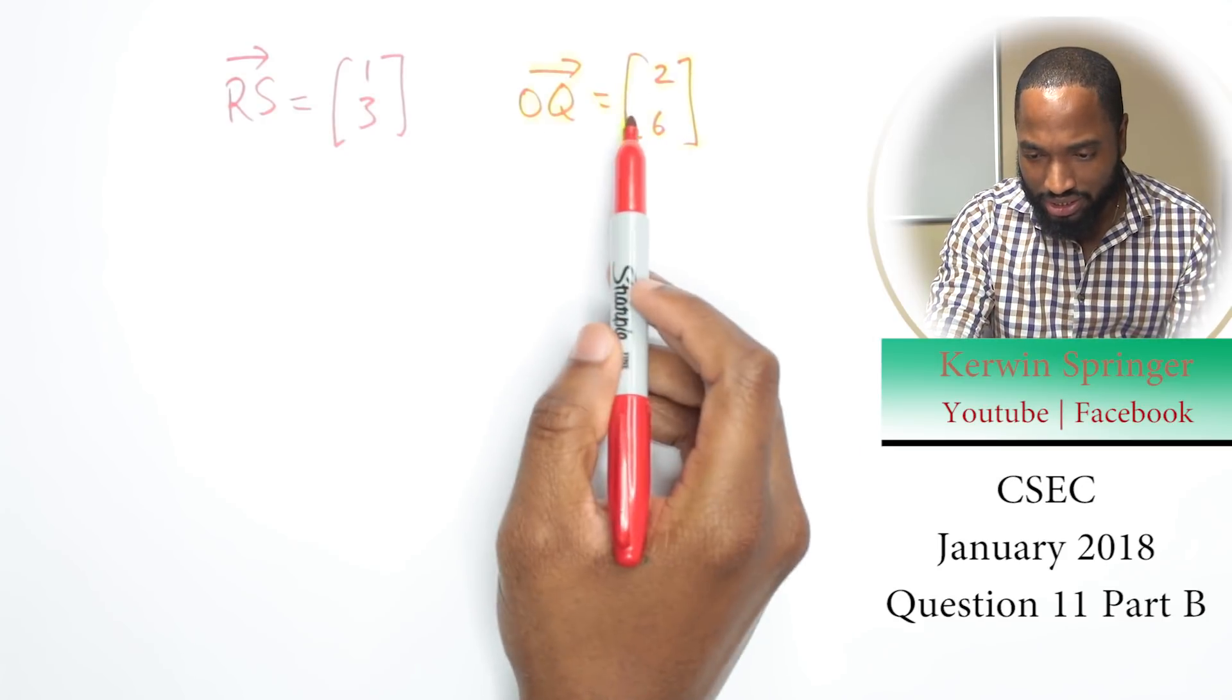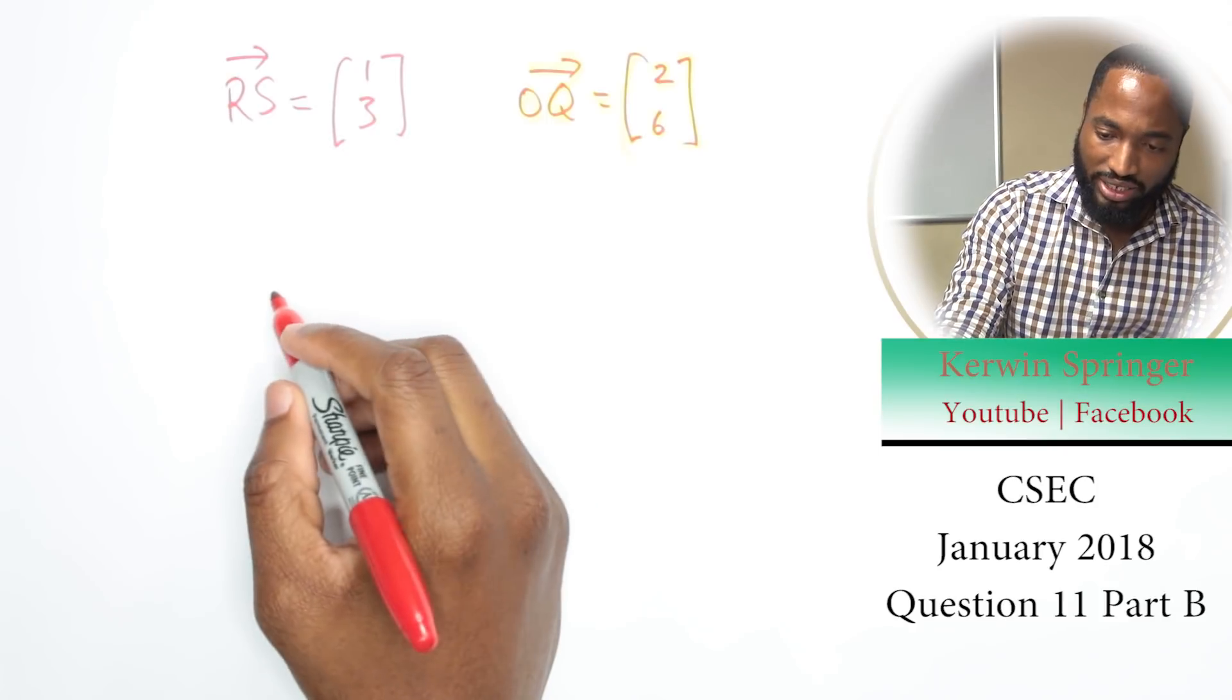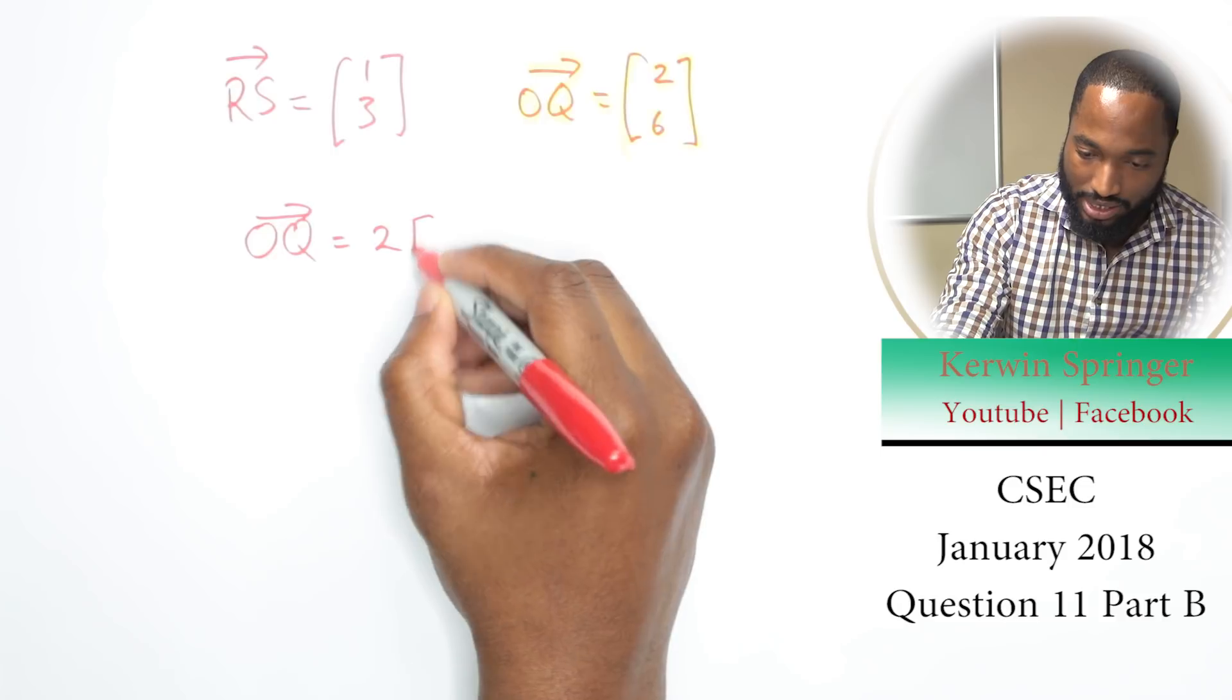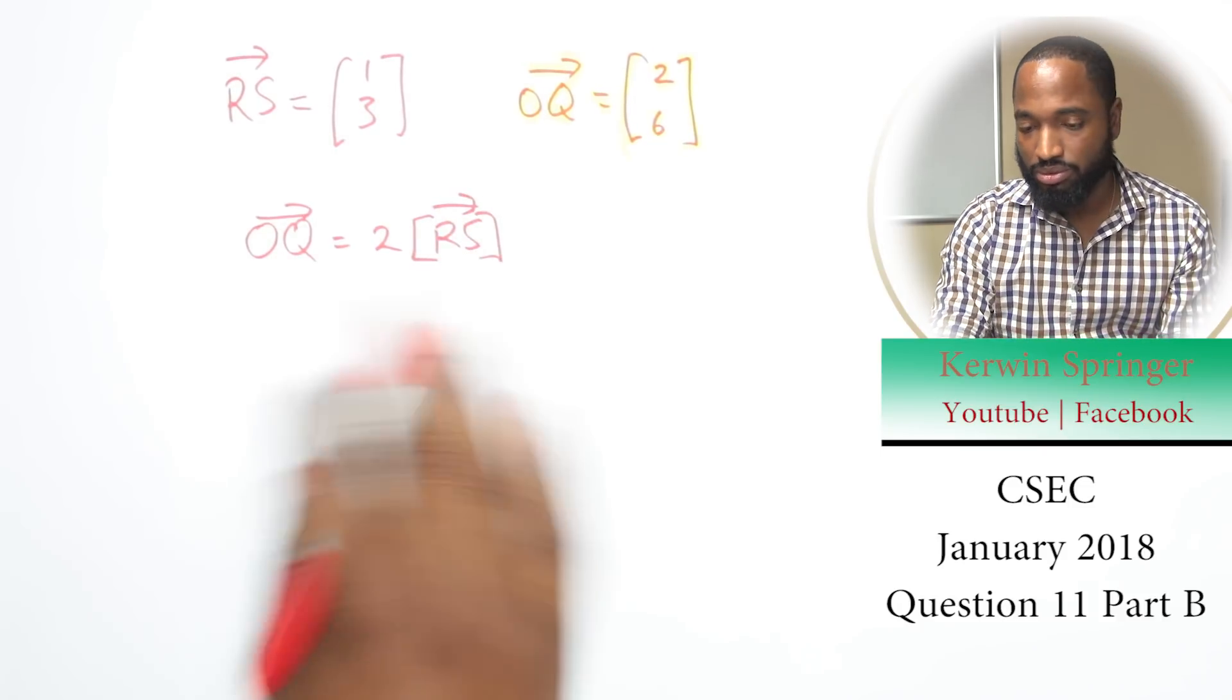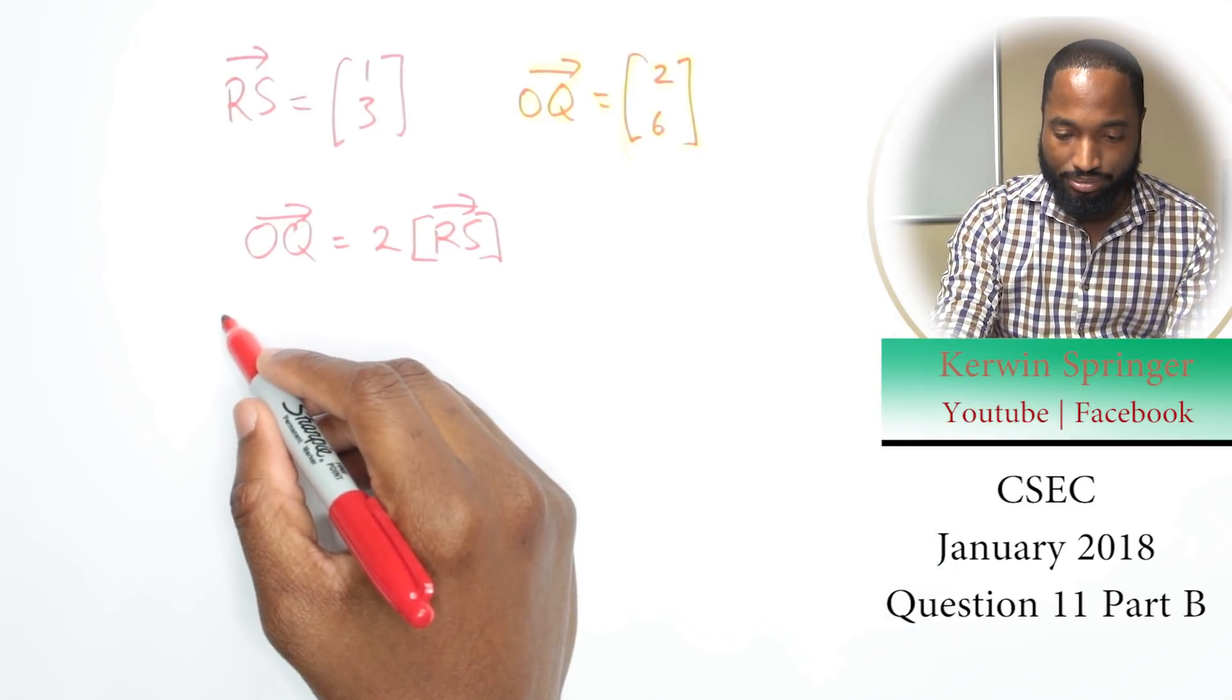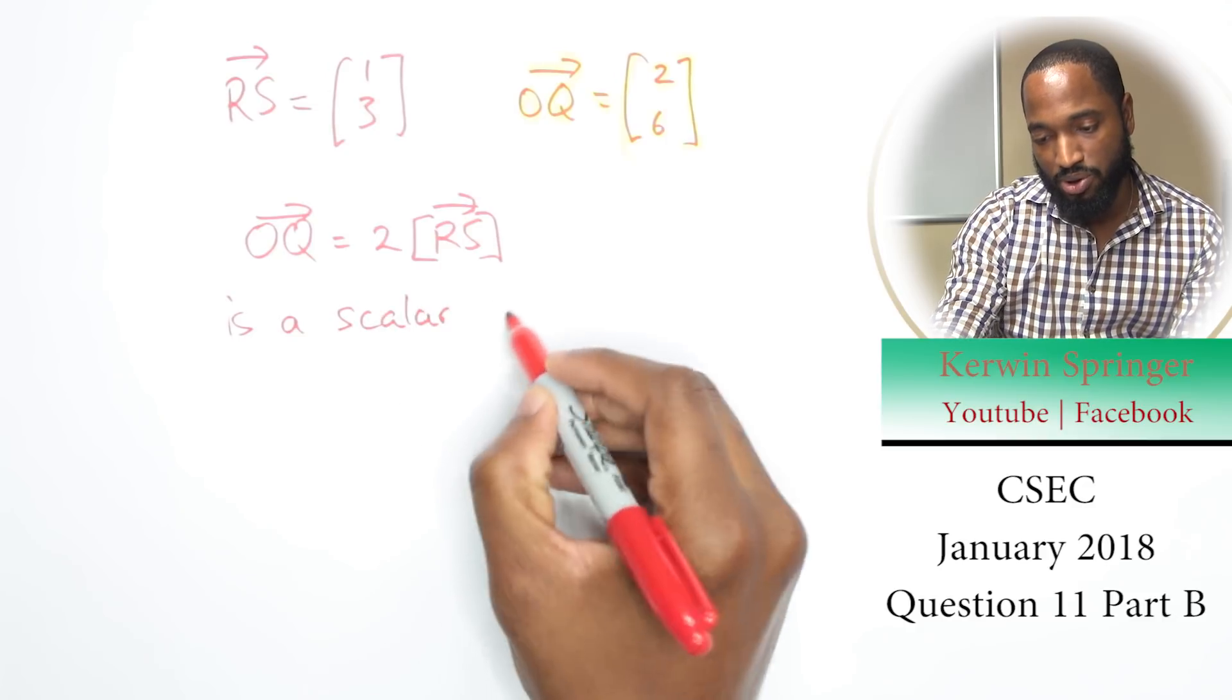This one, because you multiply by something to get that. Two. So you write: OQ is equal to two times RS. Can you see that? Yes, you can see that it is a scalar multiple.